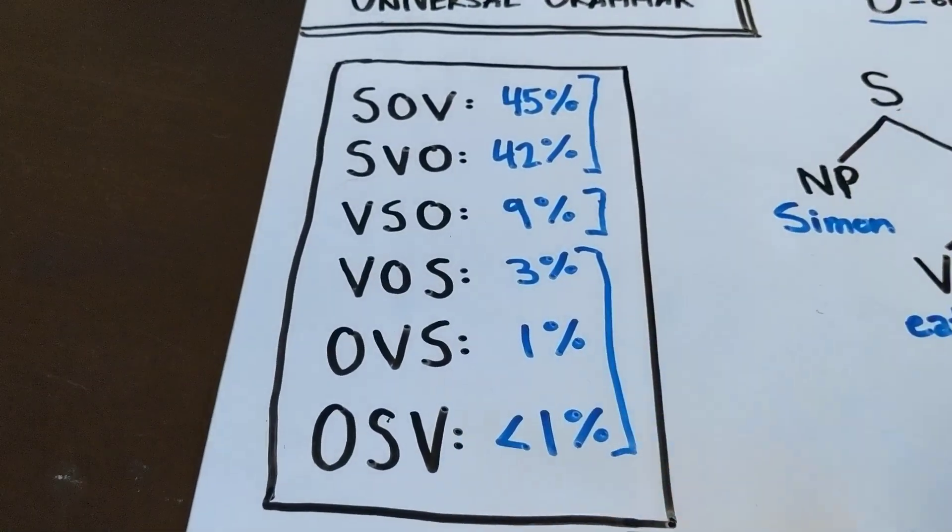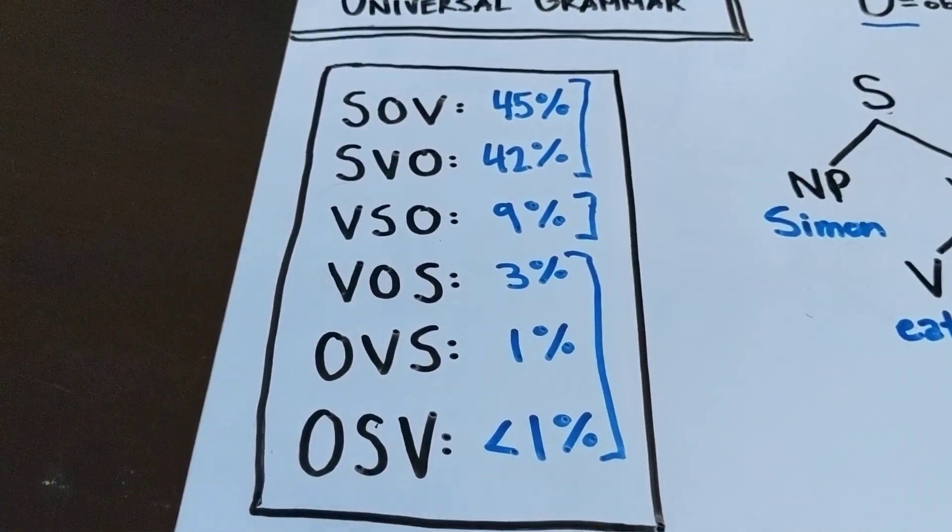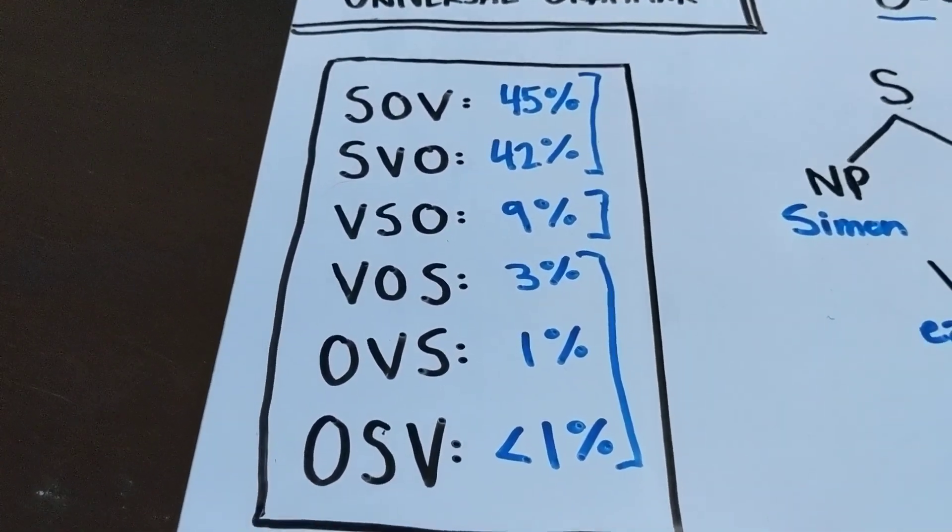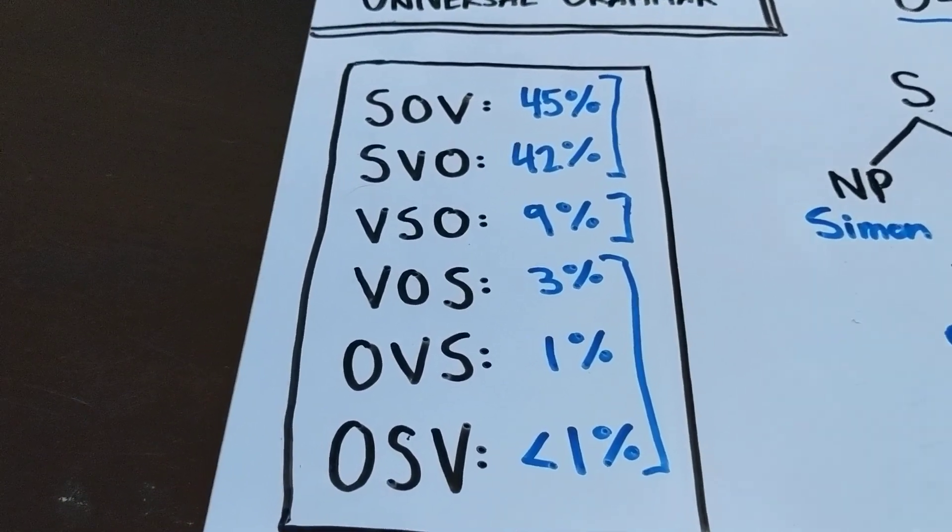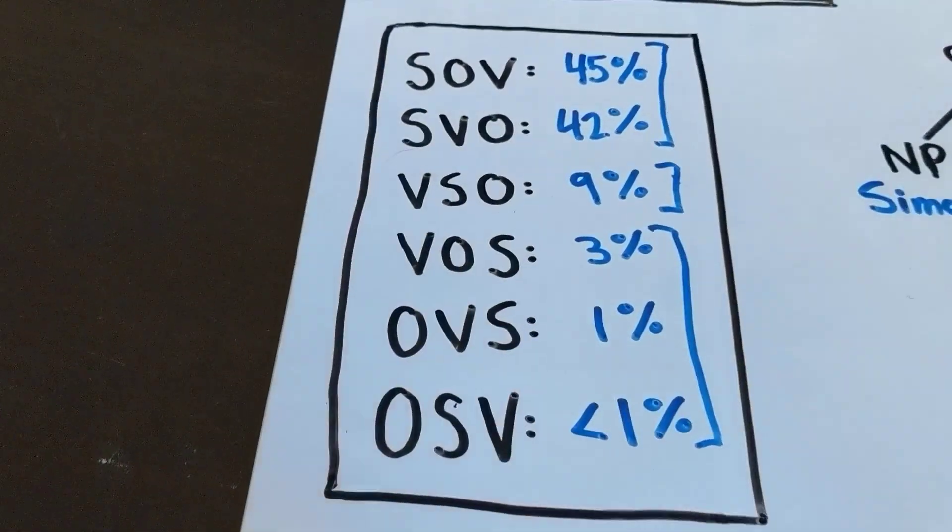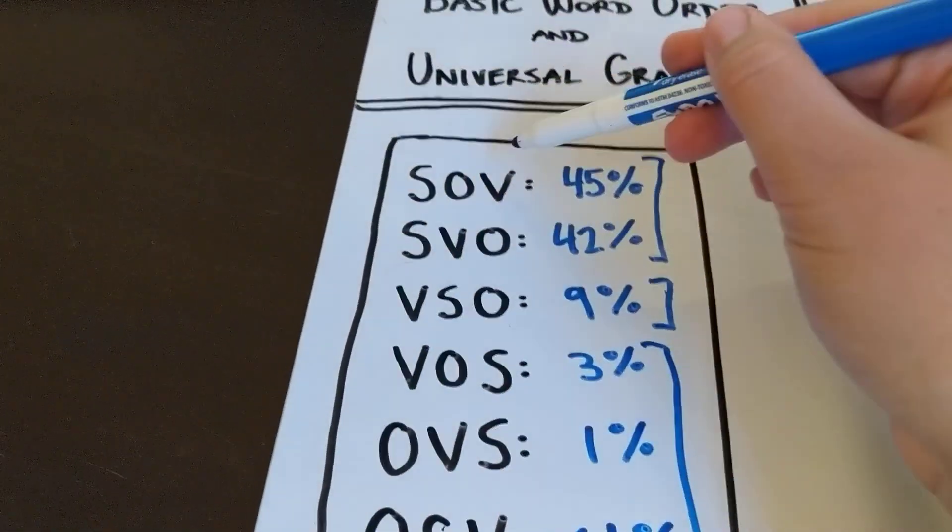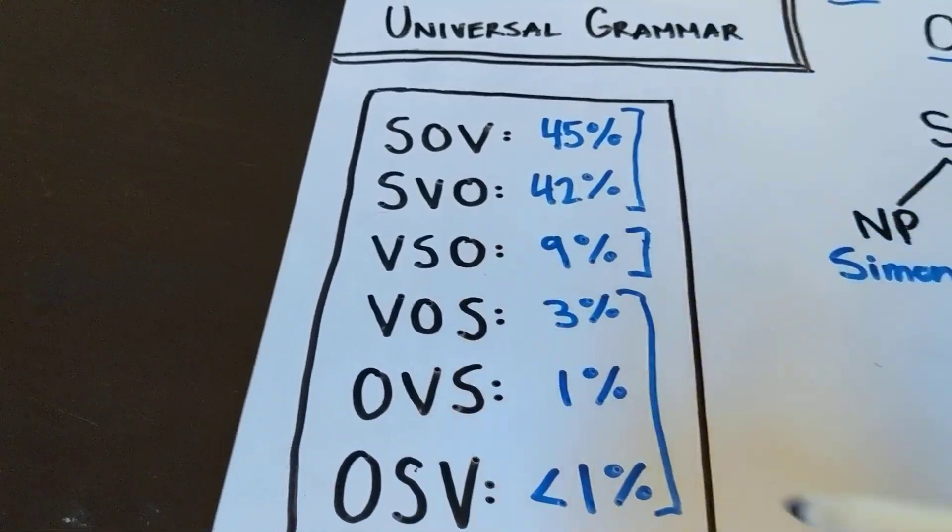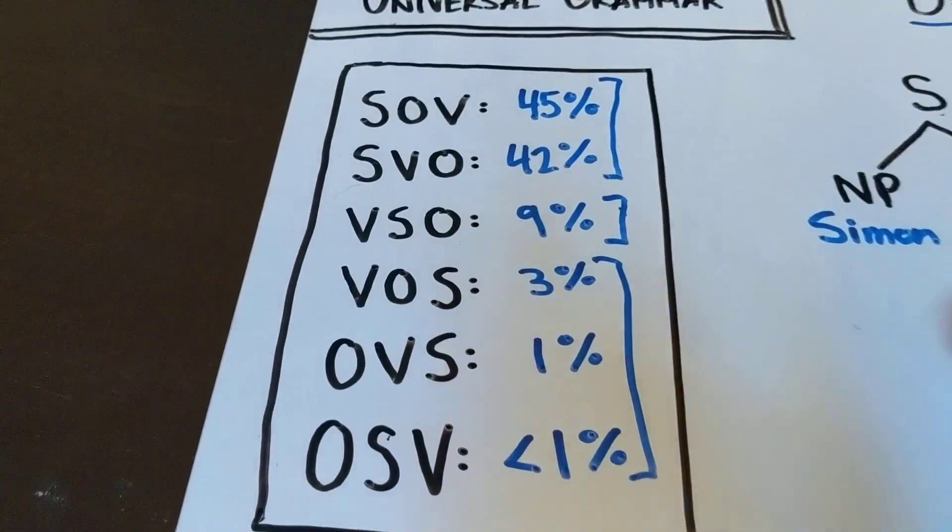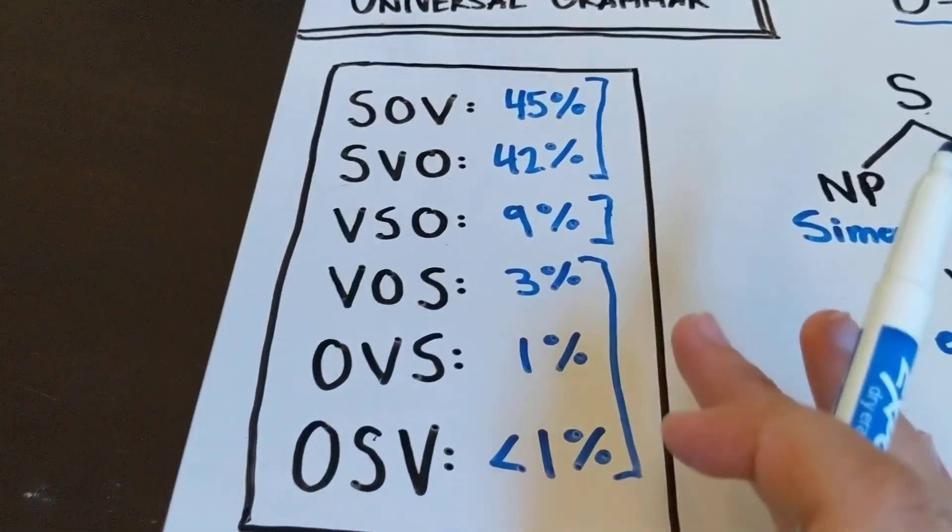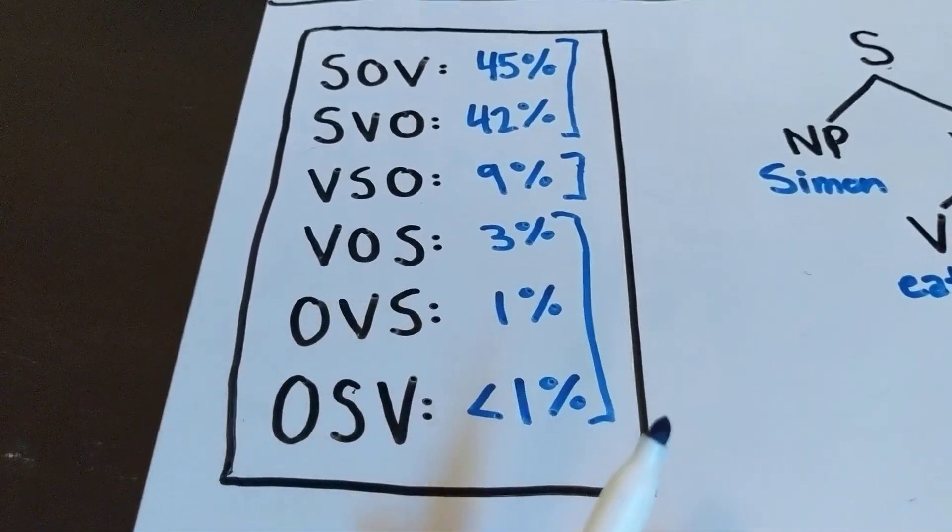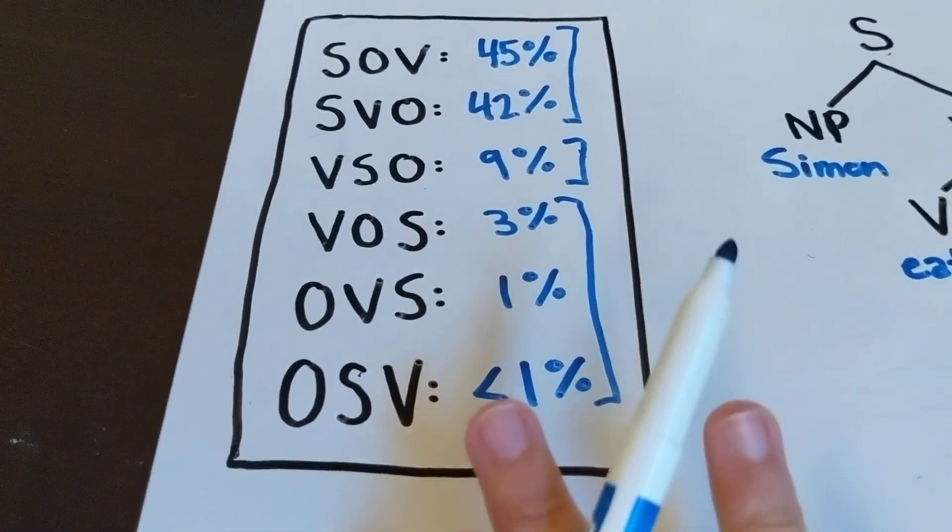So one of the things that linguists like to do is try to account for the data in the world's languages with the same sort of underlying structure. So here we have some very different surface-level forms, and we would like to be able to say that, yeah, they show up with different word orders, but logically, they all work the same way. You can have a subject, a verb, and an object, and they have the same semantic relationships to each other regardless of what order they show up in.